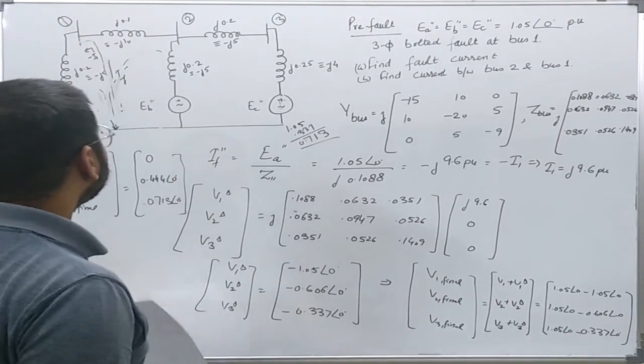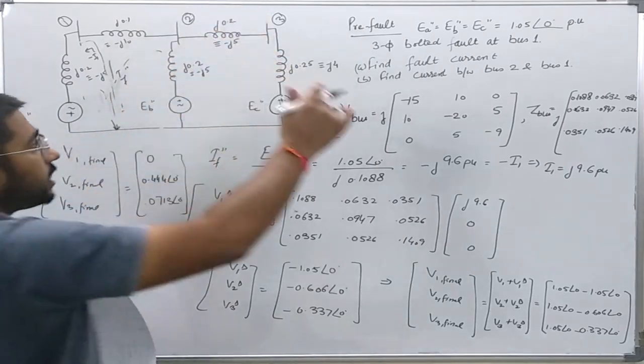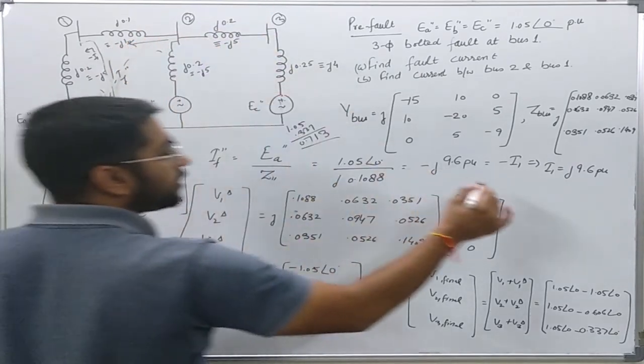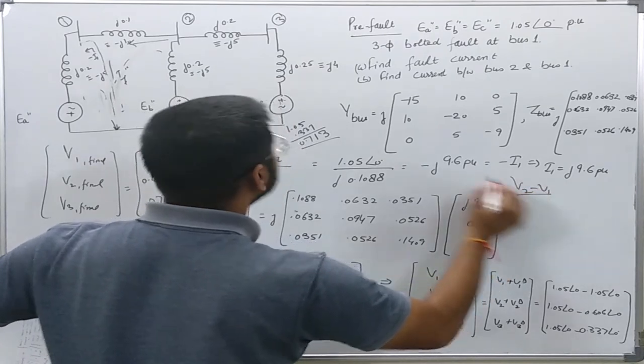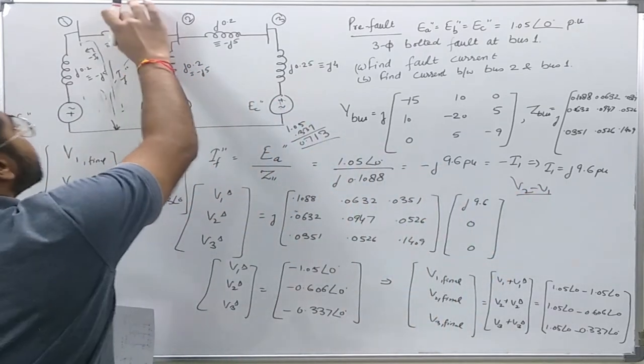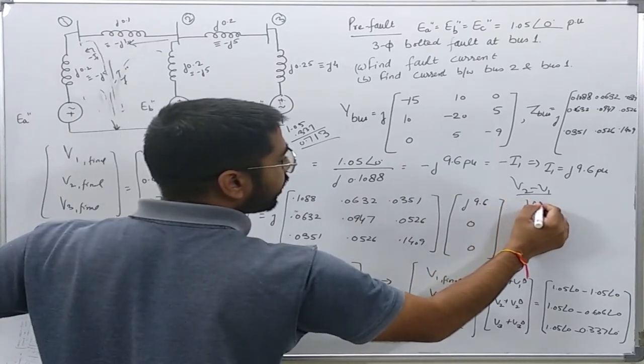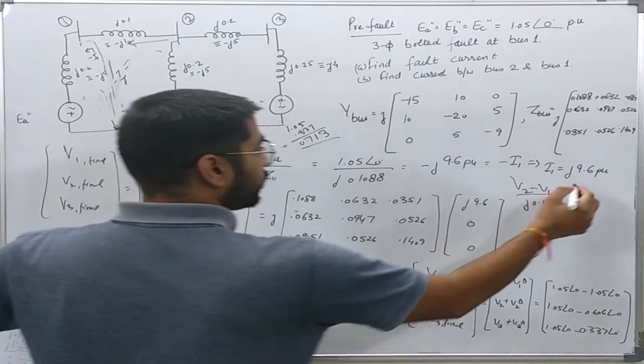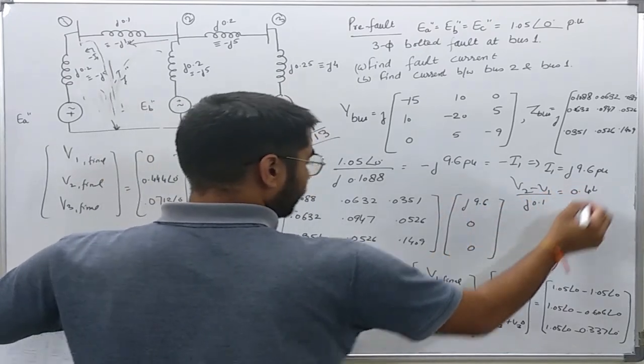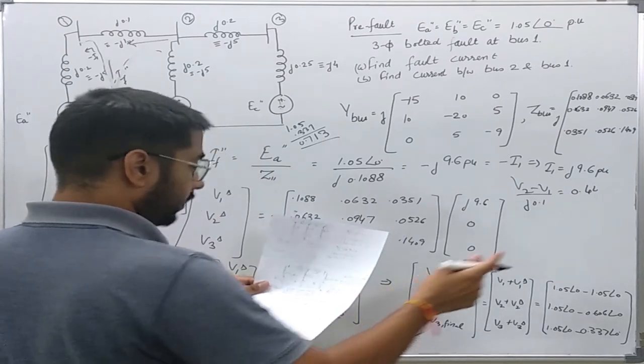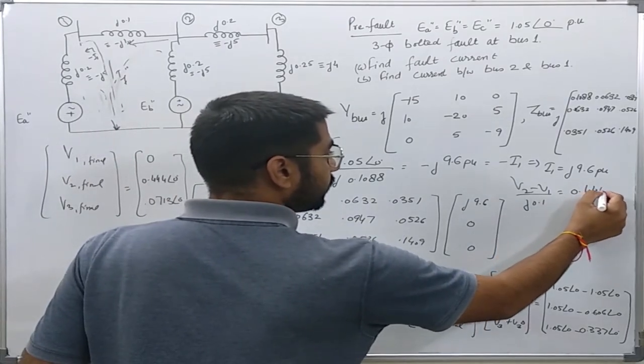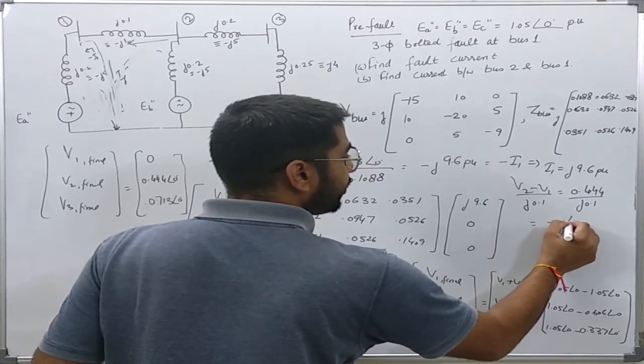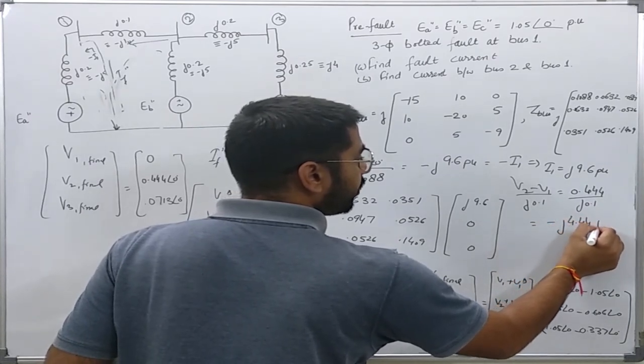I can easily find various currents also, like the current from bus 2 to bus 1 can be easily found as (V2 - V1) over this impedance j0.1. It is nothing but 0.444 divided by j0.1, and it comes out to be minus j4.44 per unit.